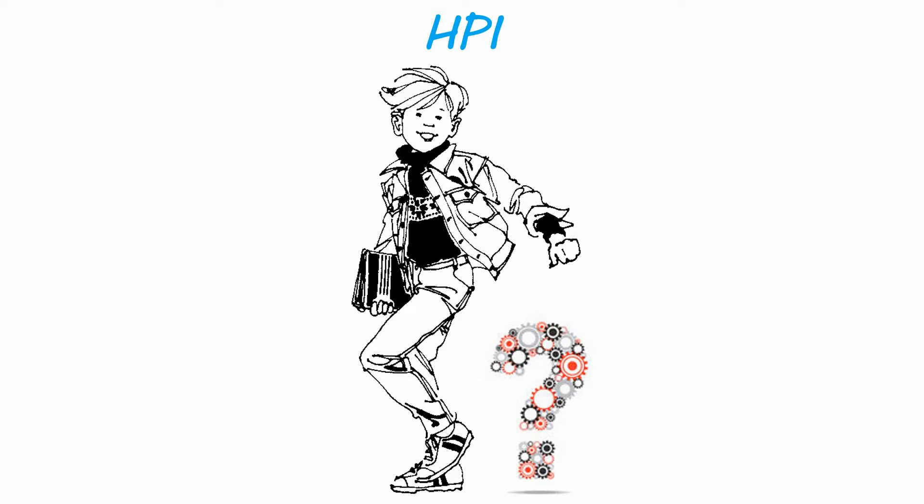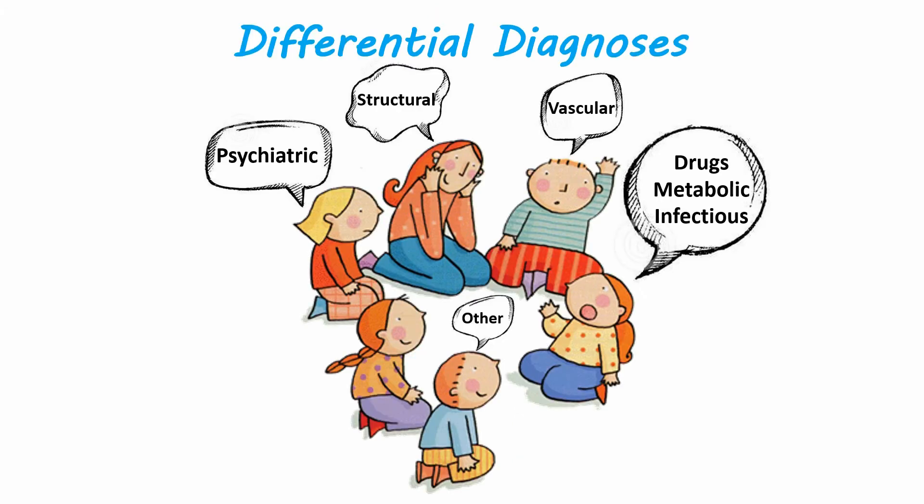The differential diagnosis for a pediatric patient with altered mental status is broad, but could be thought about in different categories, including psychiatric illnesses, structural abnormalities, vascular issues, drugs, metabolic syndromes, infectious diseases, and others, which would include seizures, complicated migraines, or alternating hemiplegia.